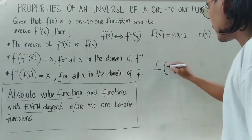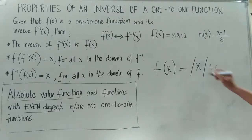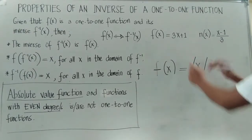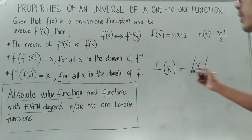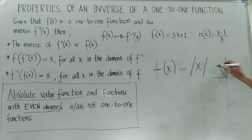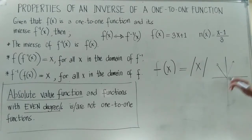An absolute value function is always in this standard form — sometimes with a constant added, or a constant inside the absolute value. When you see this form, the function is automatically not one-to-one. If illustrated on a Cartesian plane, the absolute value function always produces a V-shape graph, which may shift up or down with a constant.